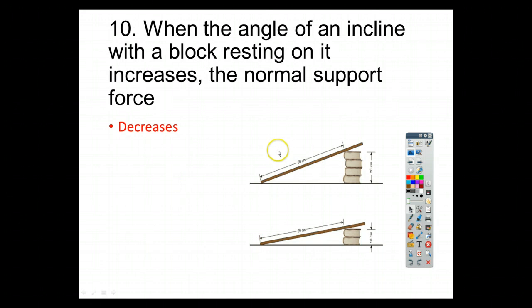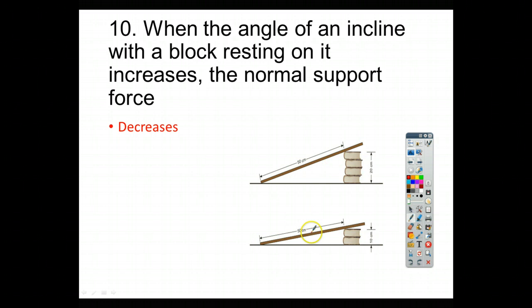For number 10, it says, when the angle of an incline with a block resting on it increases, the normal support force decreases. So, we'll go ahead and draw our triangles here. There is the force due to gravity or mass times gravity. This is the normal force. So, this is n. If I increase the incline, my n will get a little bit smaller because I've got more of that incline there. So, this arrow is a little bit bigger than this one. So, if I increase the angle, the normal support force decreases or it goes down.